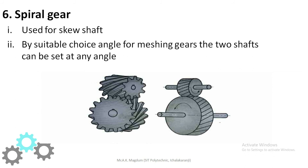Spiral gear is used for skew shafts. By suitable choice of angle for meshing gears, the two shafts can be set at any angle. This is an important advantage over bevel gears, which require the shafts to be perpendicular. In spiral gear meshing systems, there are no restrictions on shaft angle — you can mesh at any angle and transmit power from one shaft to another.